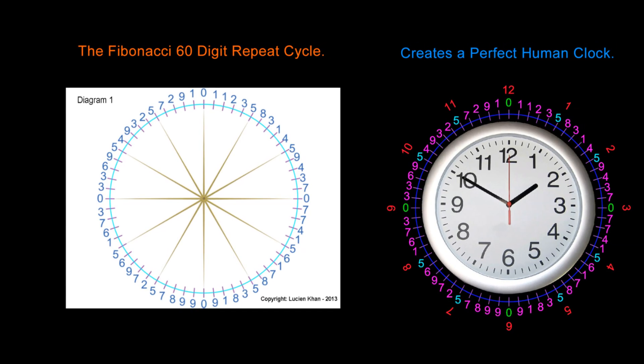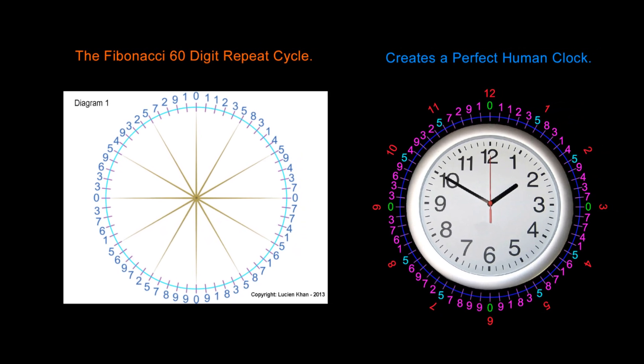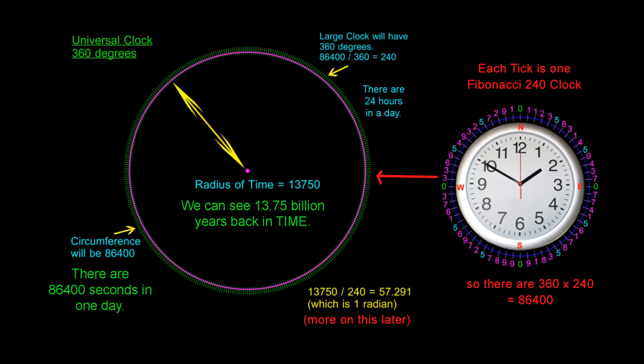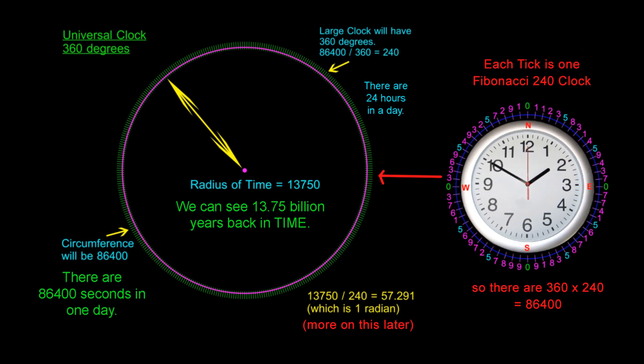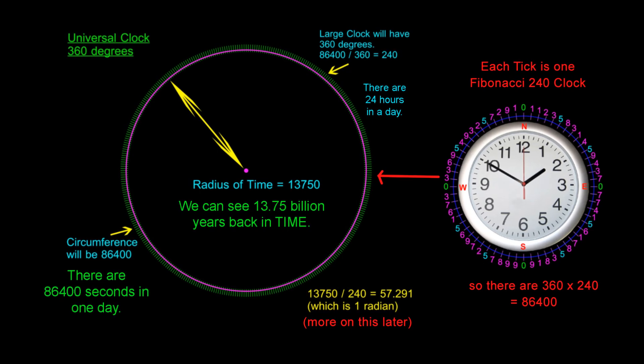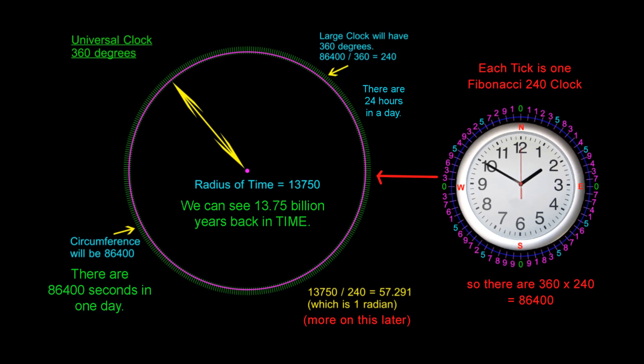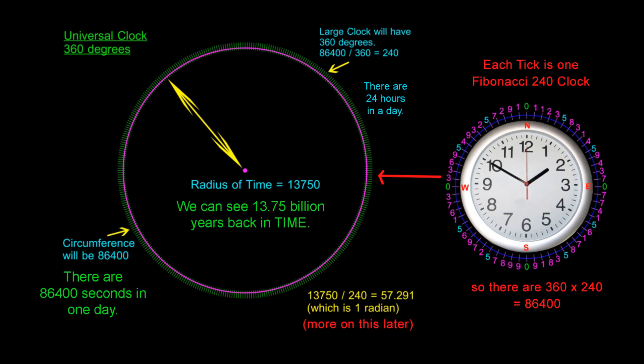Mathematical information stored in cycles of time are generating the universe we see around us. There was no Big Bang. What physicists see as the radius of time is simply the radius of an infinite circle, which we have given a value of 86,400 units.